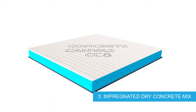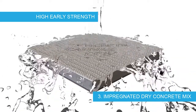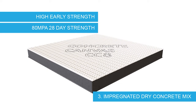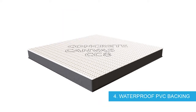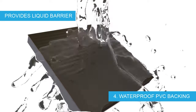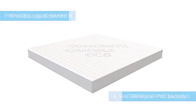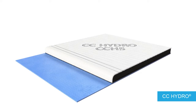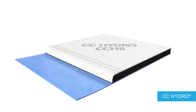The third element is the dry cementitious powder mix itself, which has a very high early strength gain. Once wet, the material will harden to 60% strength in 24 hours and has a 28-day compressive strength of 80 MPa. Finally, the material has a waterproof PVC membrane backing on the rear face that provides an effective liquid barrier. There is a variant called CC Hydro that combines the concrete-filled fabric technology with a high impermeability, chemically resistant, reinforced geomembrane liner.